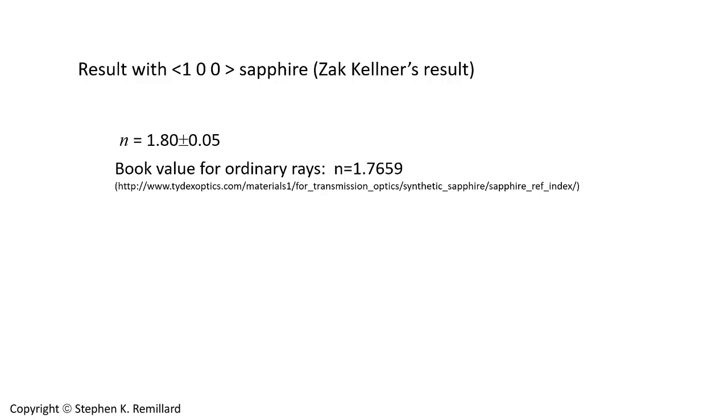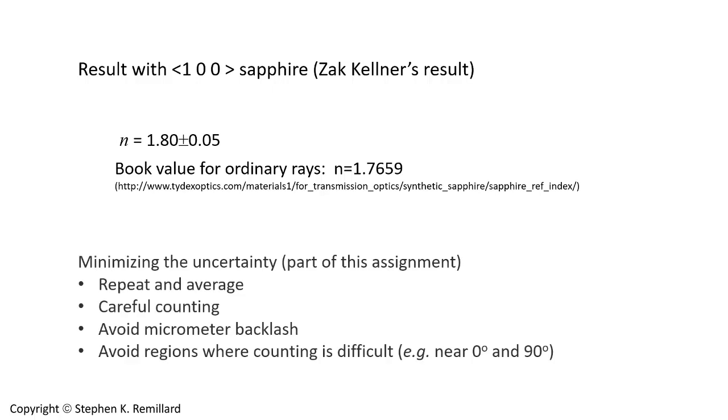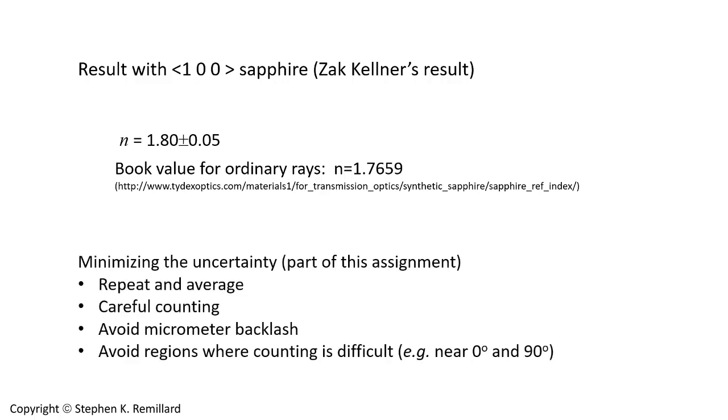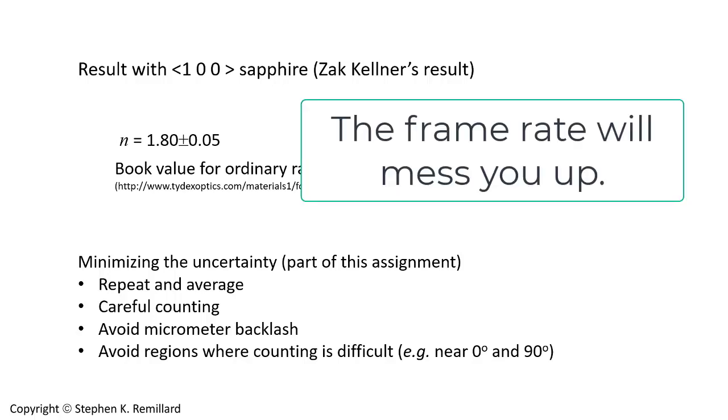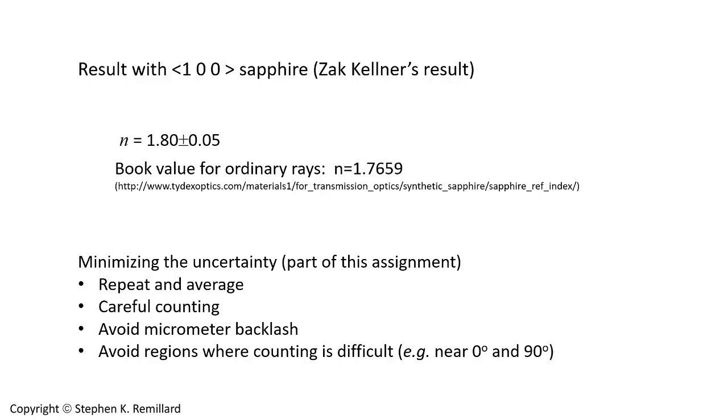Now this brings up an important thing. As you do your experiments, the uncertainties need to be analyzed and minimized. Perhaps you can get a smaller than 0.05 with repeating your measurements and averaging and being meticulous and careful with your counting. Certainly don't do it the way I did it by video recording the fringes going by and then attempting to count them. Be sure to avoid micrometer backlash because that adds a miscount to your number of fringes. And avoid regions where counting is difficult, such as near the extremes of 0 and 90 degrees. I went from 9 to 29 in my measurement. Perhaps 9 was too close to 0 and maybe I should have started at 20 and gone to 40 or 50.